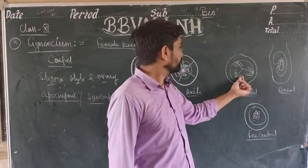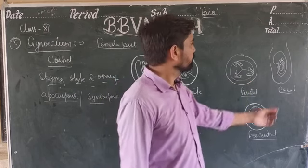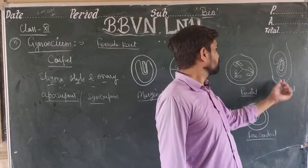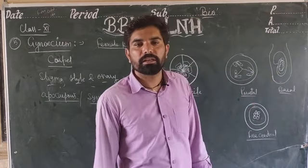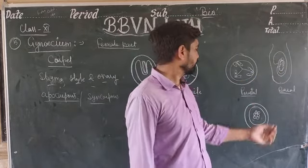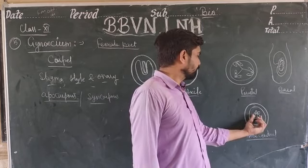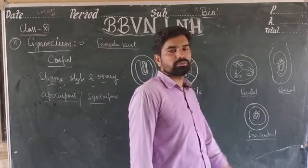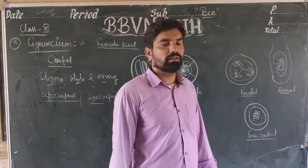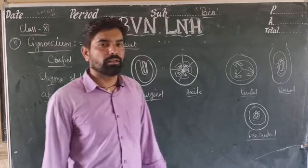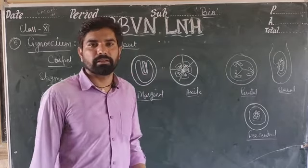In parietal placentation, the ovules are arranged on the surface — the peripheral area of the ovary. Then there is basal placentation, where ovules are at the base, composed in the central area. In free central placentation, ovules are free in the center and not connected or joined to anything.